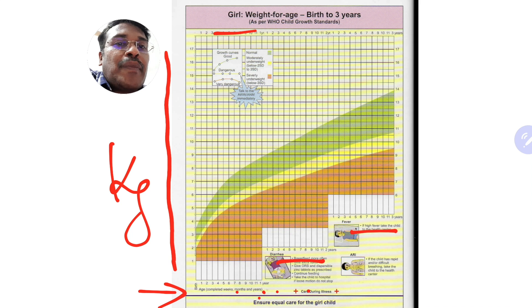What you have to do is you have to plot the weight every month, first month, second month, third month like that. Every month the growth should be plotted and these dotted lines should be joined together.